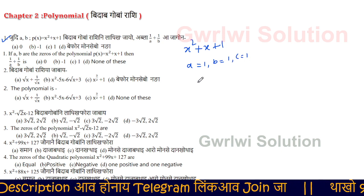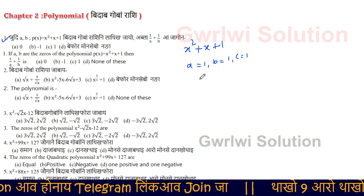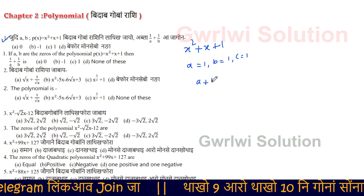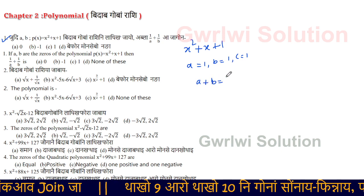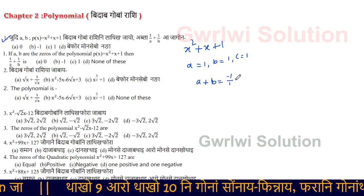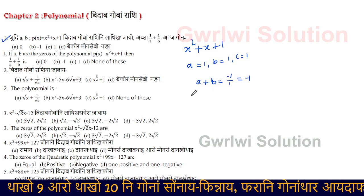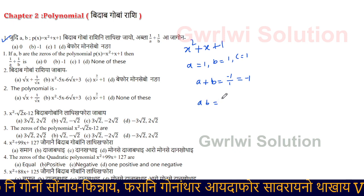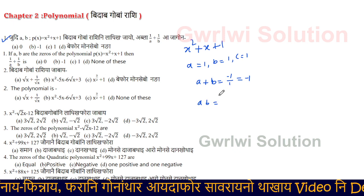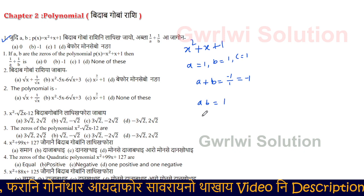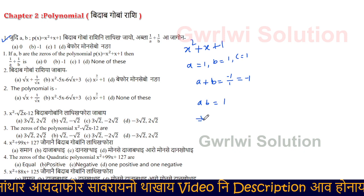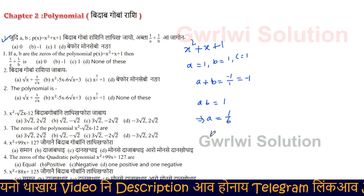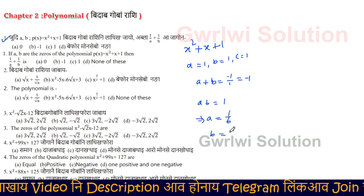If you look at this term, A plus B is equal to minus B. So minus 1 by 1 is equal to minus 1. If we write A into B, we write C by A. C is equal to 1. Then A is equal to 0, so it is equal to 0.